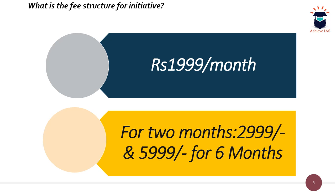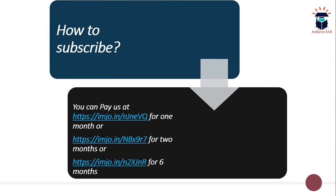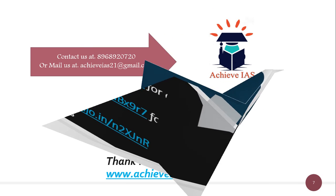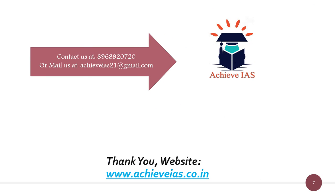If you are interested in joining, you can use the links shown on your screen, which will also be provided in the description box. You can check the description box and join our initiative for daily answer writing, get your answers evaluated, and improve your answer writing skills with expert feedback. For any doubts or queries, you can contact us at 8968920720 or mail us at achieveies21@gmail.com.